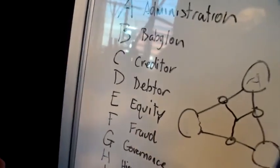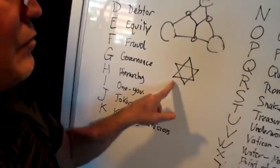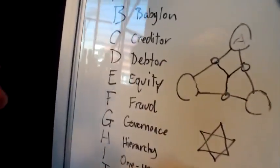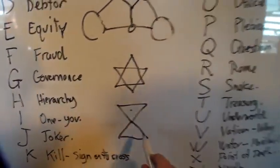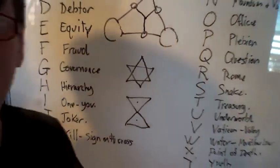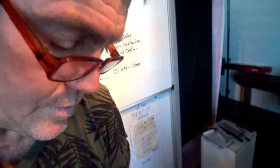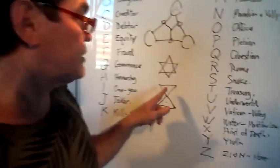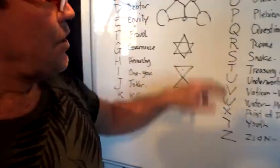For the Israeli symbol — the Star of David — it's really the Old Testament and the New Testament merged together. When you merge those together you get this symbol, which is the two trusts — the Old Testament, the Old Covenant, and the New Testament.